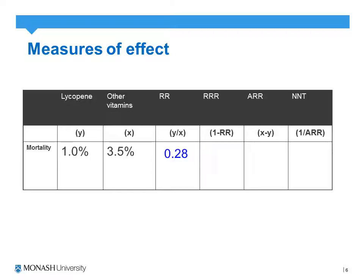For relative risk: a value of 1 indicates no difference between intervention and control groups. If relative risk is less than 1, it indicates the treatment is beneficial; if above 1, the control or comparison is beneficial. Our relative risk of 0.28 is less than 1, indicating benefit. However, it's difficult to explain a relative risk of 0.28 to a patient, so we use relative risk reduction — which is simply 1 minus the relative risk — giving us 72%. We can communicate that the risk of dying from cancer is reduced by 72% with lycopene compared to other vitamins.